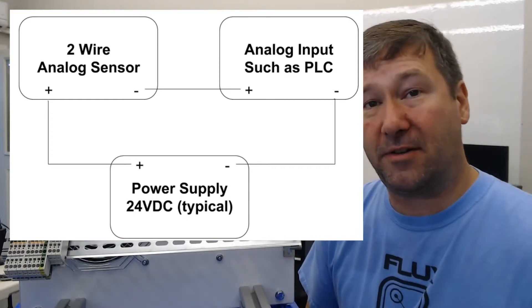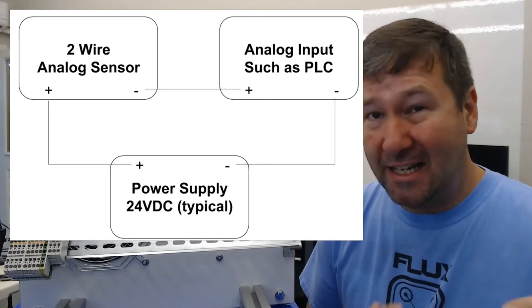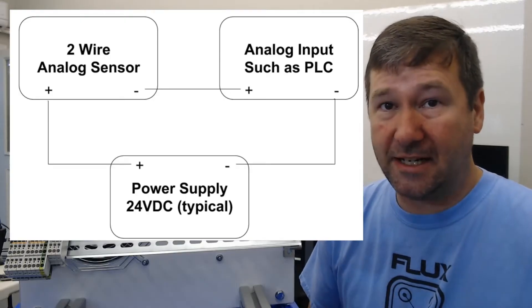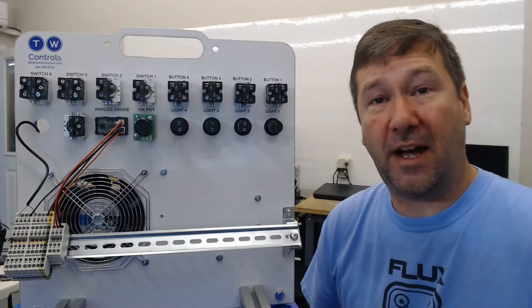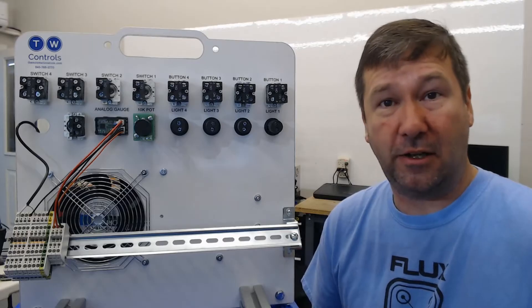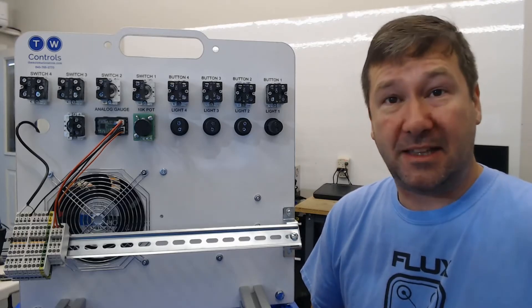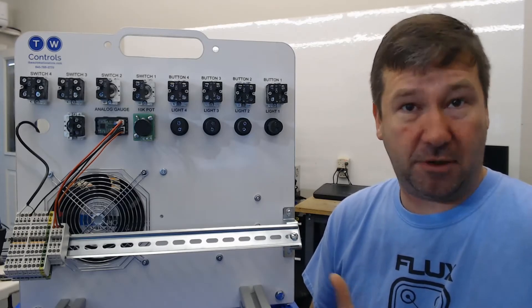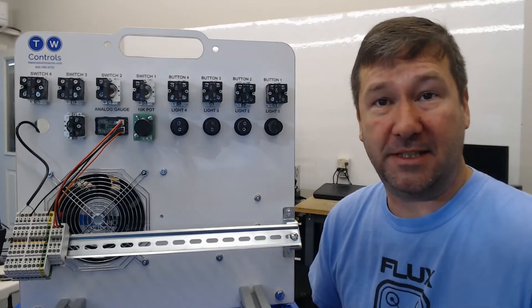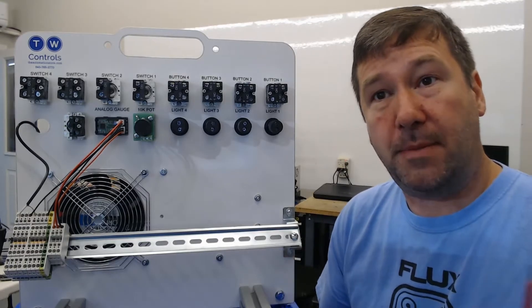This is by far the simplest type of instruments, as long as you get those positive and negative straight. Also, you'll find a lot of 2-wire devices are very low power, which can mean that they may be intrinsically safe or good for explosion-proof environments. So let's go ahead and wire up a 2-wire circuit.